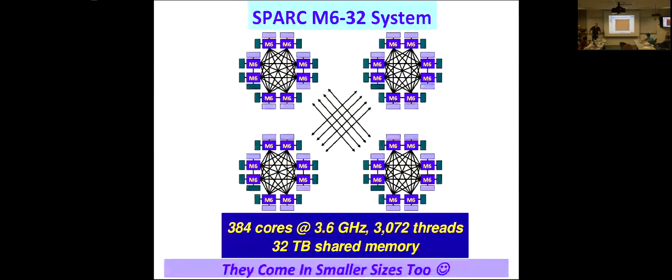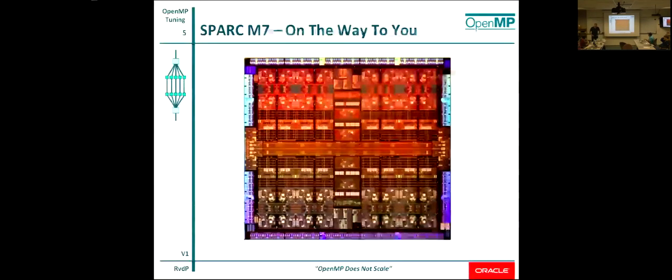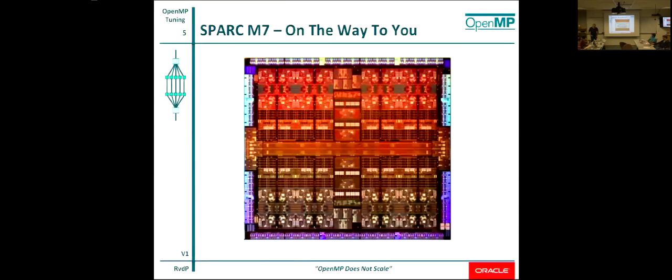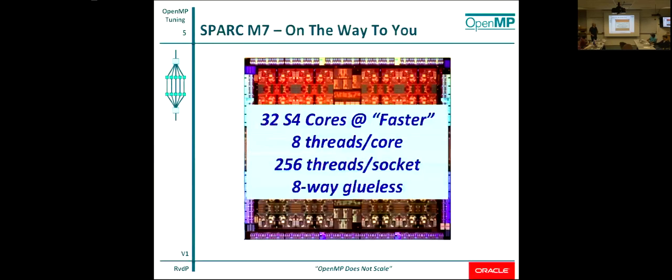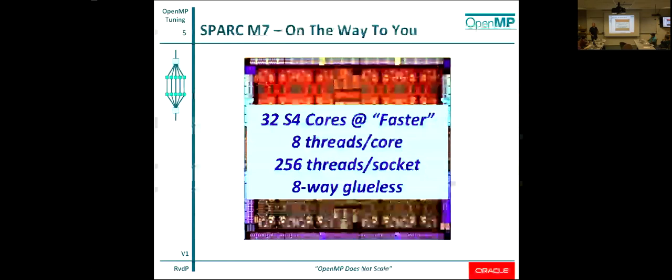The largest system that we have is called M6-32. It's called 32 because it has 32 sockets. In total, that will give you 384 cores at 3.6 gigahertz, a little over 3,000 threads, and it also supports 32 terabytes of shared memory. What's on the way, this is public information, is the SPARC M7. That's the new processor, and we have a redesigned core compared to the T5. There are 32 now on the chip. The speed is faster.